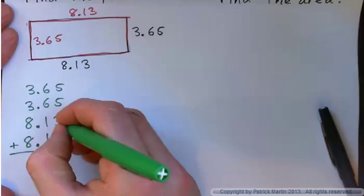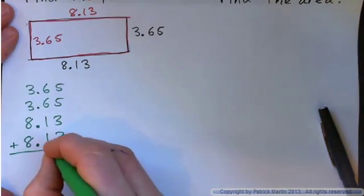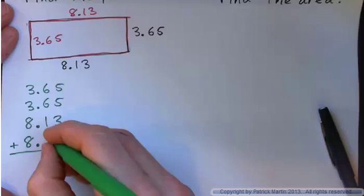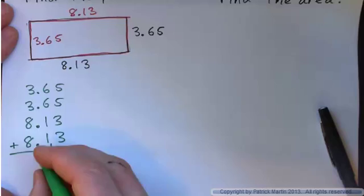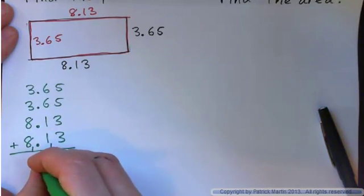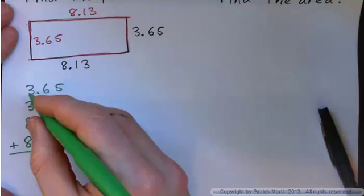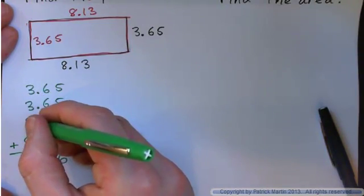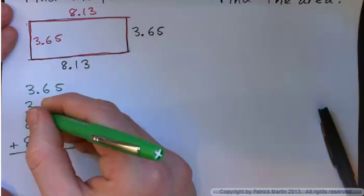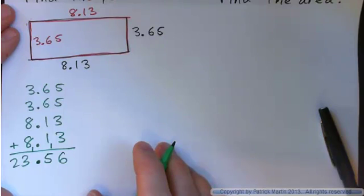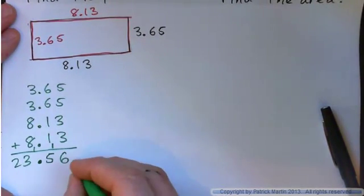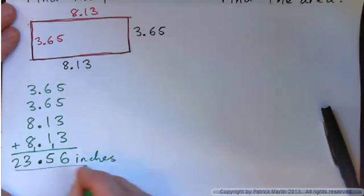Okay, now I'll do it. 5 and 5 is 10. And this is 6. 10 and 6 is 16. Carry the 1. 1, 2, 3. And 6 is 9. And 6 is 15. Carry the 1, put down the decimal point. Okay, so we've got 8 and 8 is 16. And 1 is 17. And 3 is 20. And 3 is 23. So, the perimeter is 23.56 inches. So that's the perimeter.